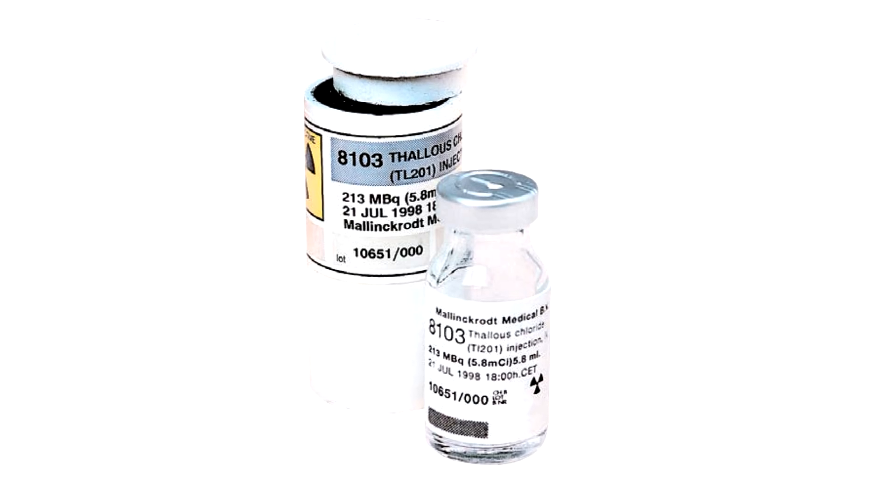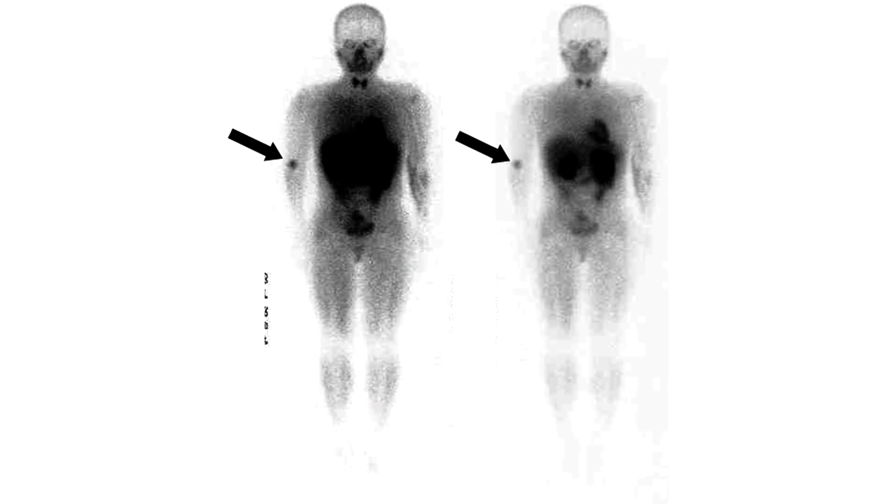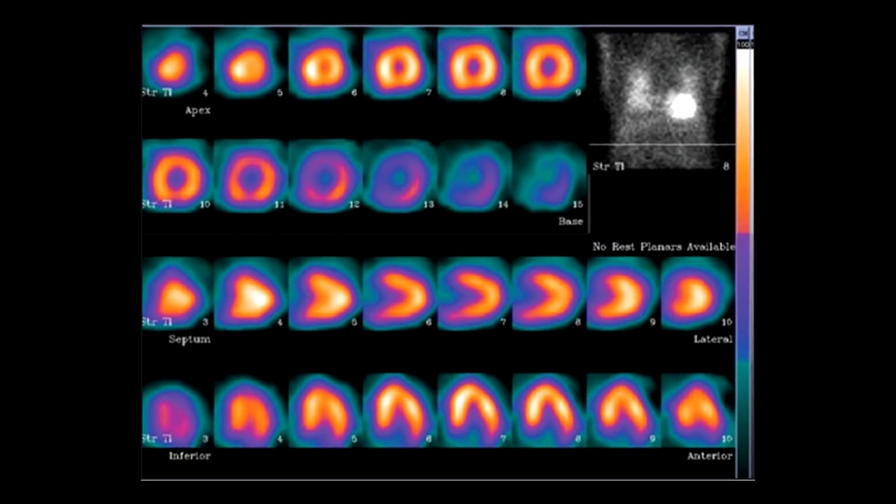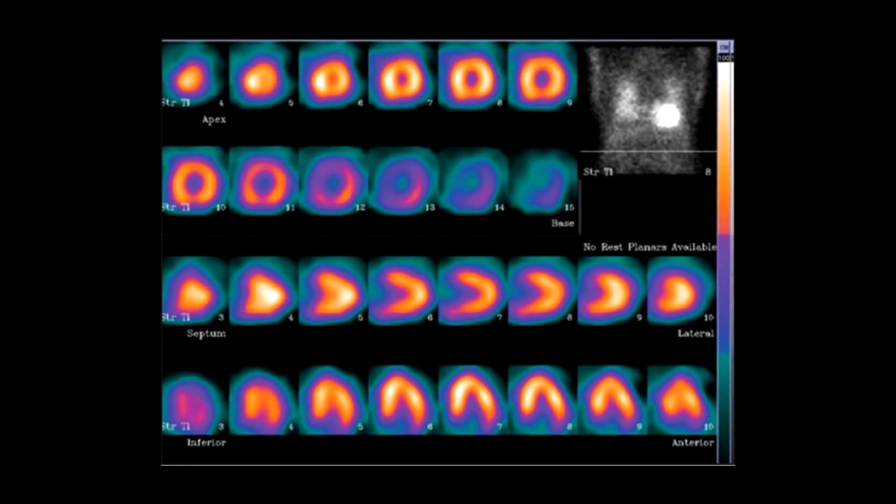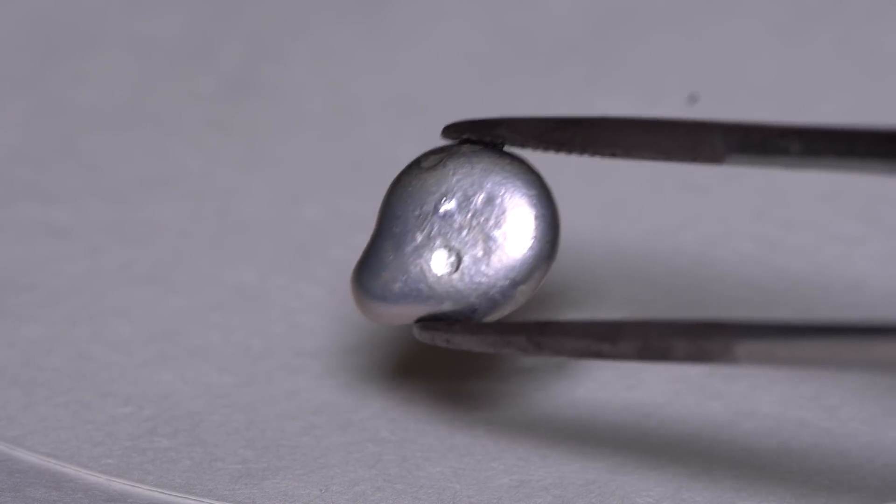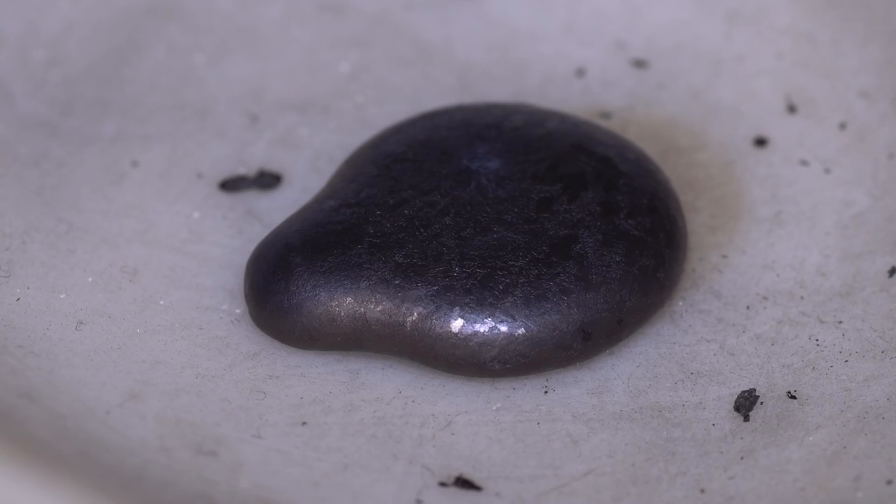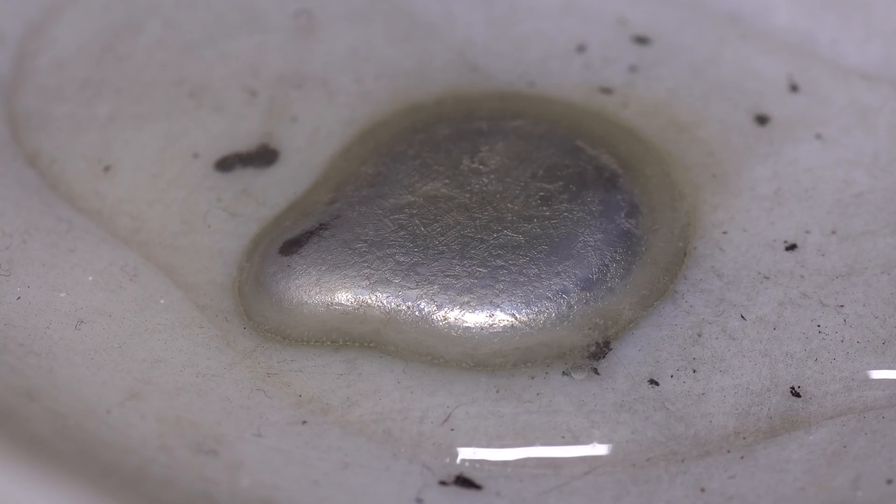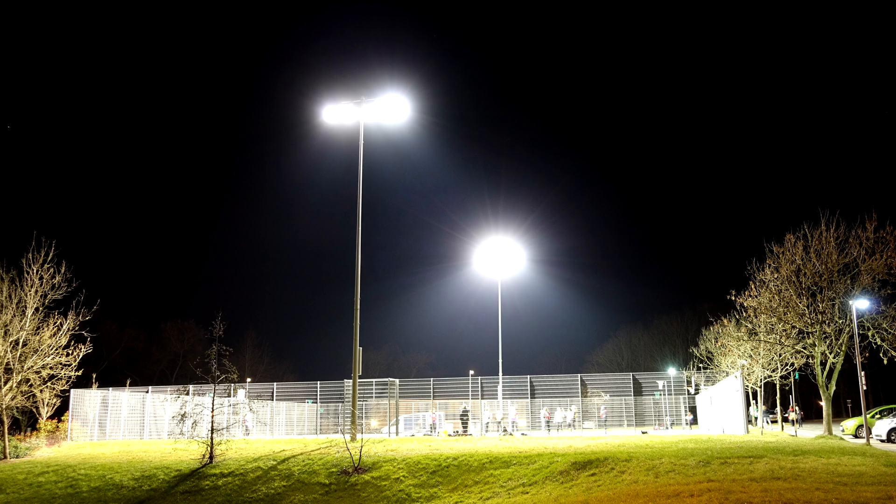Nowadays thallium is even used in medicine. Isotope thallium-201 is used in scintigraphy, that is getting two-dimensional images of organs. To sum up, we can say that the world is changing and what used to be used as a poison can now be used to treat disease and also to light up the streets.